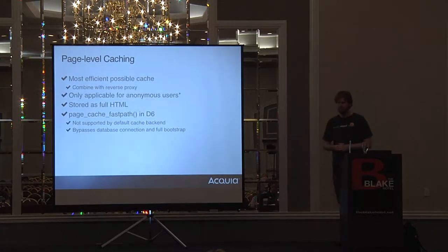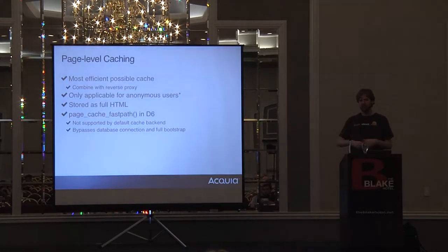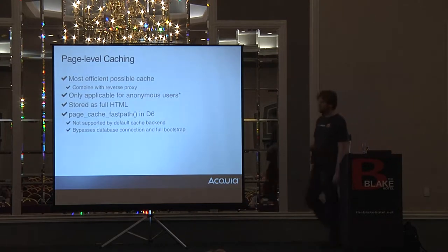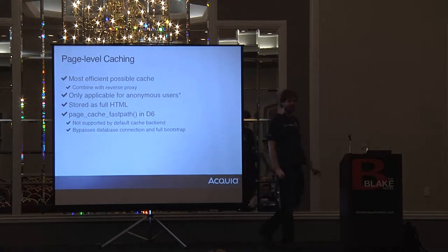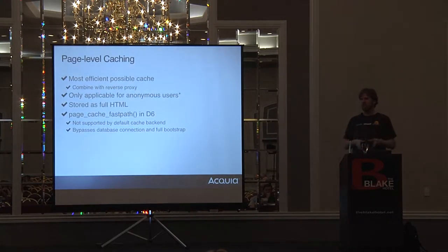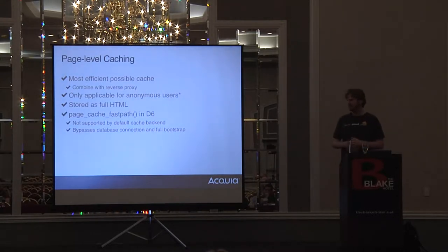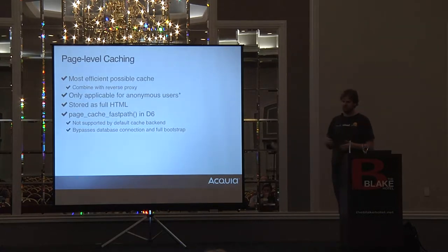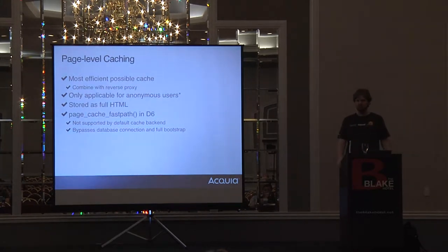Page-level caching is for anonymous users — pages that are the same for everyone. As long as everything's cached and they're all anonymous, you shouldn't ever really run into performance issues; if you are, there's probably something serious going on. One nice trick in Drupal 6 is what's called fast path caching. If an anonymous user comes into your site, this sends the page out before much happens in Drupal — it's a lot faster than usual. This also exists in Drupal 7. The memcache module supports it, and fast path is the term to look into.